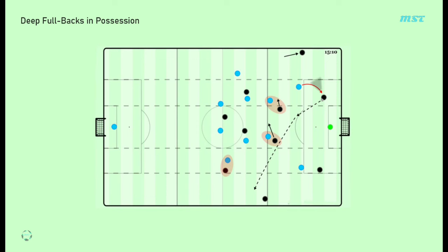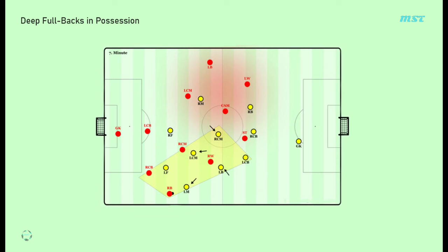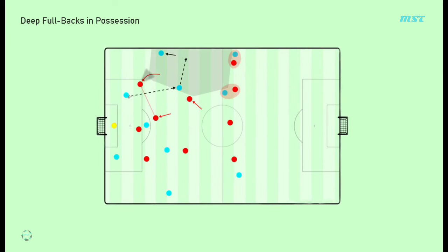A common solution against such pressing schemes has been to drop a midfielder into the first line to create a back three, while the fullbacks move into high and wide positions. Through having a third player in the first line, the lines move slightly wider and it becomes more difficult for the opponent to apply wide pressure. The weakness of this structure is that it can lead to lesser presence in the second line, and the central build-up can be difficult.